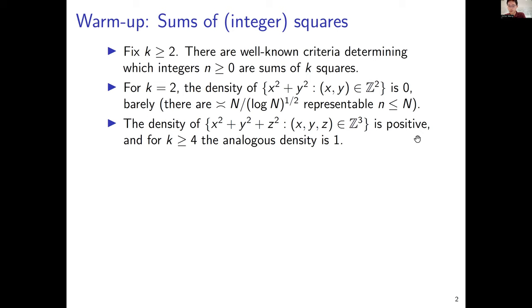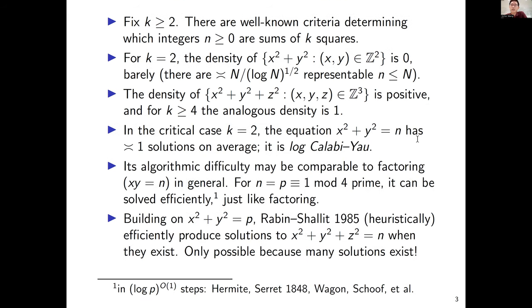The point is that the more variables you have, the easier it is to solve these equations, because there's more room to find solutions. Another way to say this: the critical case is where the number of variables equals the degree, so k equals two. The equation x² + y² = n, averaged over n, will typically have a constant number of solutions on average—by an elementary geometry of numbers argument. The fancy way to say this is that x² + y² = n is a log Calabi-Yau variety.